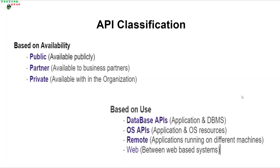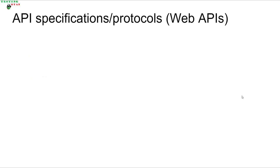Then there are private APIs. Now, APIs based on their usage — for example, database APIs, which help the communication between the application and the database management system or DBMS. Then there are OS APIs, which help the communication between the application and operating system resources. Then there are remote APIs, which help the communication between different applications running on different machines. The fourth classification is web APIs, which help the communication between web-based systems. In this session, we will be covering web APIs.